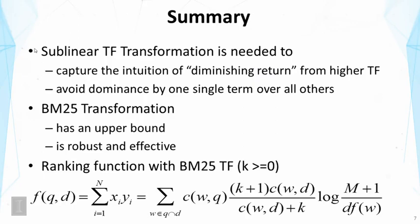So to summarize this lecture, the main point is that we need to do sublinear TF transformation. And this is needed to capture the intuition of diminishing return from higher term counts. It's also to avoid dominance by one single term over all others.